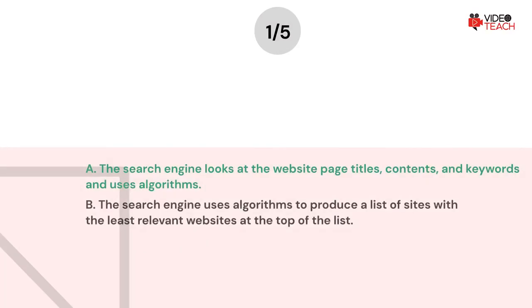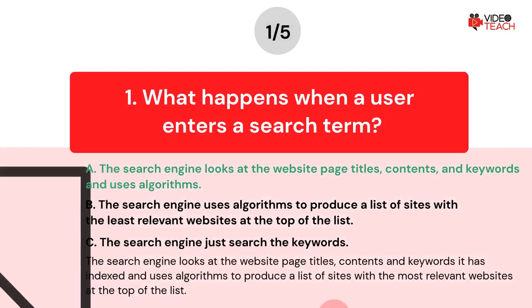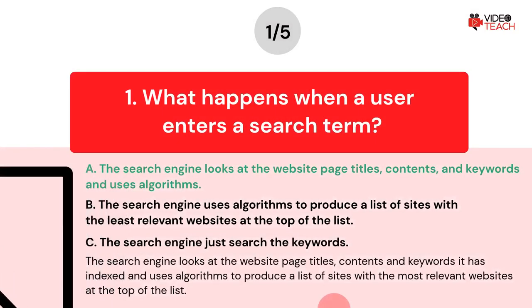The correct answer is Option A. The search engine looks at the website page titles, contents, and keywords it has indexed and uses algorithms to produce a list of sites with the most relevant websites at the top of the list.